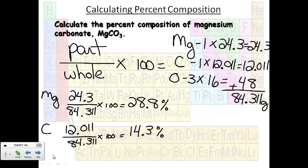And lastly, we want to do the oxygen. Oxygen contributed 48 grams to the molar mass, so we're going to put that 48 over the mass of the whole compound, times 100. And you should get 56.9%.